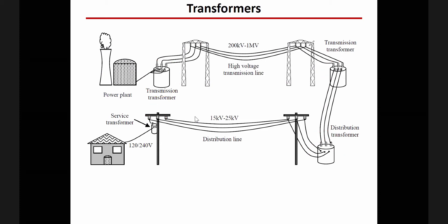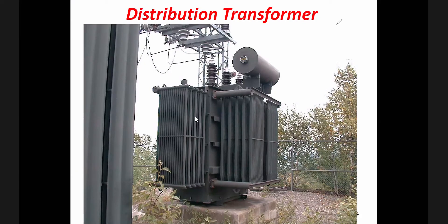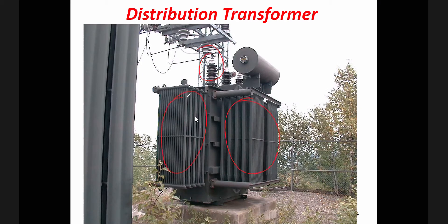There are many uses for transformers, but in the power grid we use them before transmission and on the distribution side. This is a picture of a transformer at the distribution level — this is how transformers look. Inside this transformer we have the magnetic circuit. Other equipment you see here includes insulators to insulate the transformer and fans for cooling purposes, but inside you have the core which is the magnetic circuit which we already studied.